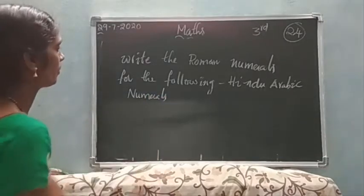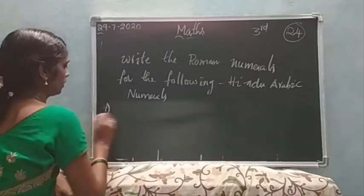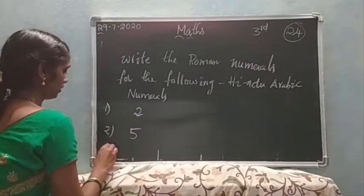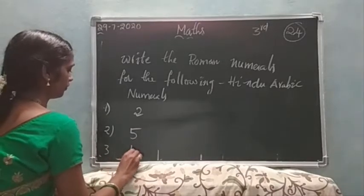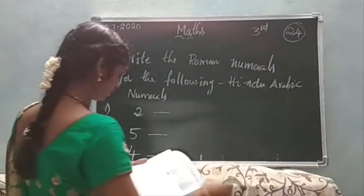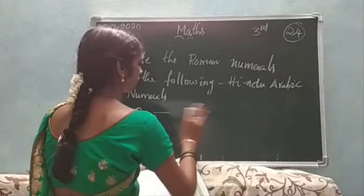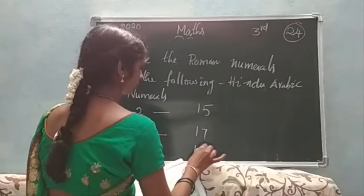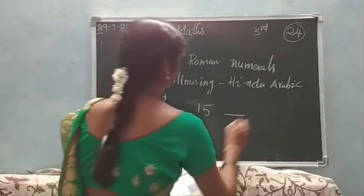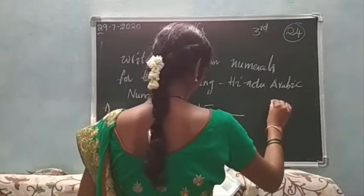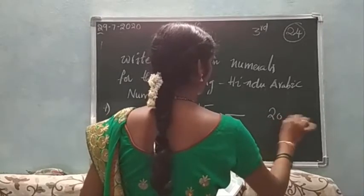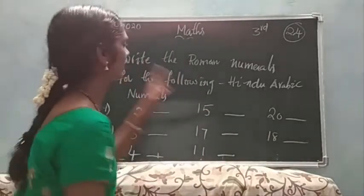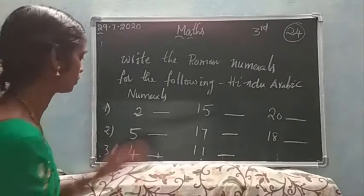First of all I will give you some numbers, then write here: 2, 5. Then 50, 70, 11, 20, 18. I can give you some numbers - write the Roman numerals for the following Hindu-Arabic numerals.